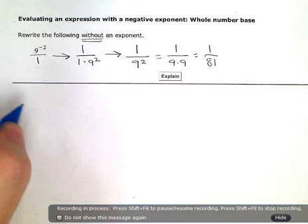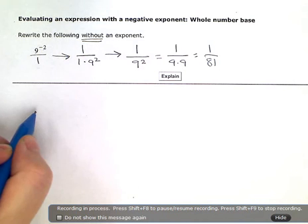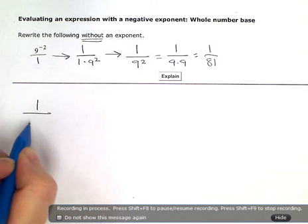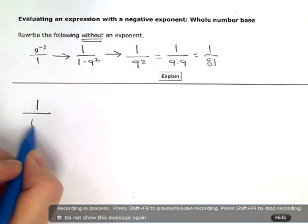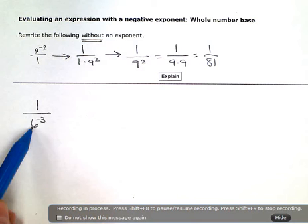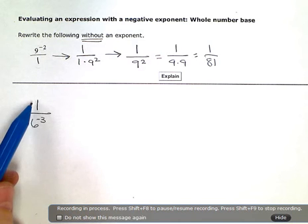Now, if I had started with, they didn't give me this problem, but just in case you get one like this. If I had started with something down in the denominator with the negative exponent, that just means I'm not happy in this neighborhood. I want to cross the tracks, or cross the bar and move to a different neighborhood.